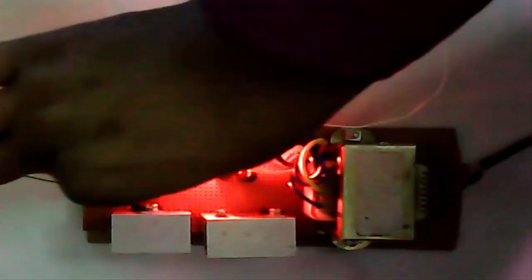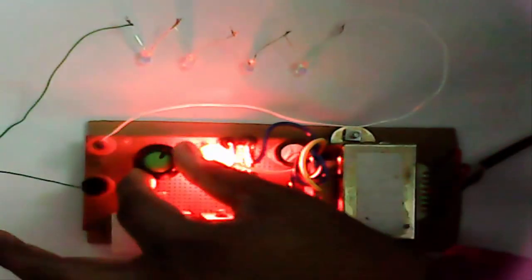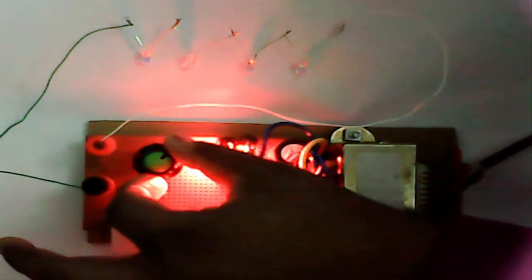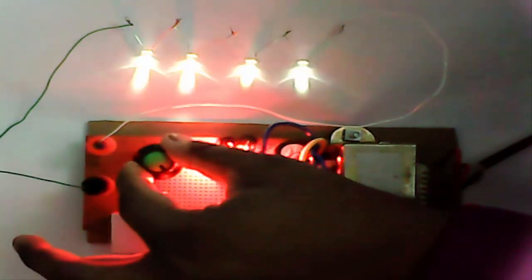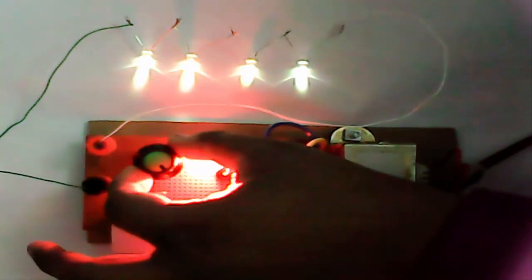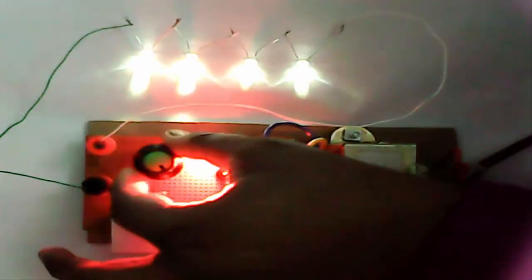Now we control the brightness with the volume knob. See, it gets brighter and brighter, and we can also reduce the brightness.